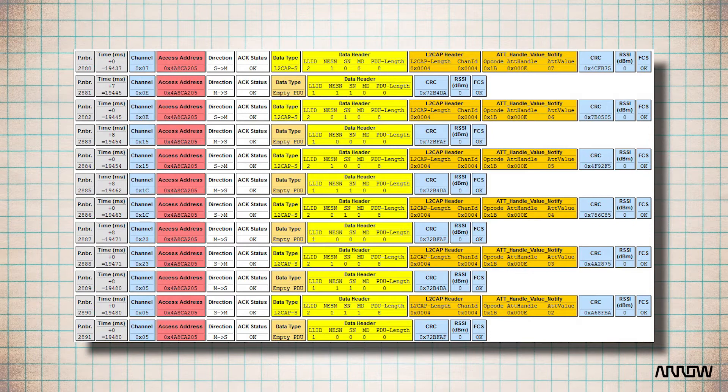The sequence number changes at each data point and works in conjunction with the NESN for reliable communication. If there were no acknowledgement, the slave would send the same NESN and SN number, and the master would know the slave did not receive the previous acknowledgement, thus the data needs to be resent.